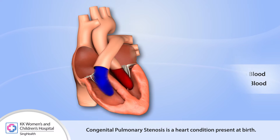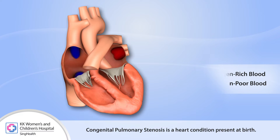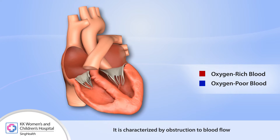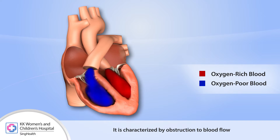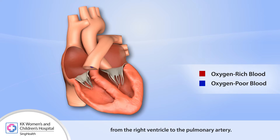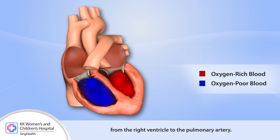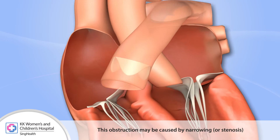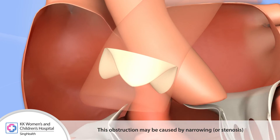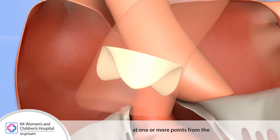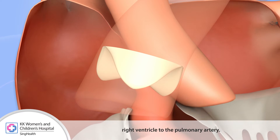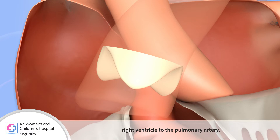Congenital pulmonary stenosis is a heart condition present at birth. It is characterized by obstruction to blood flow from the right ventricle to the pulmonary artery. This obstruction may be caused by narrowing or stenosis at one or more points from the right ventricle to the pulmonary artery.